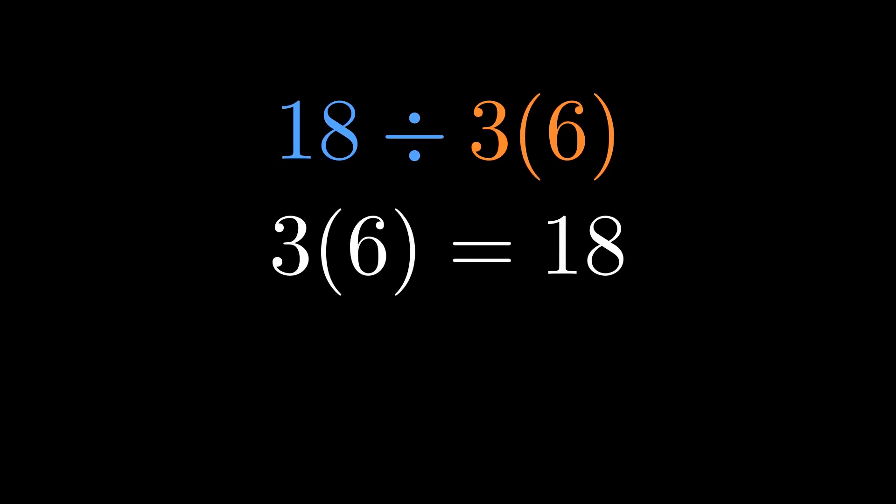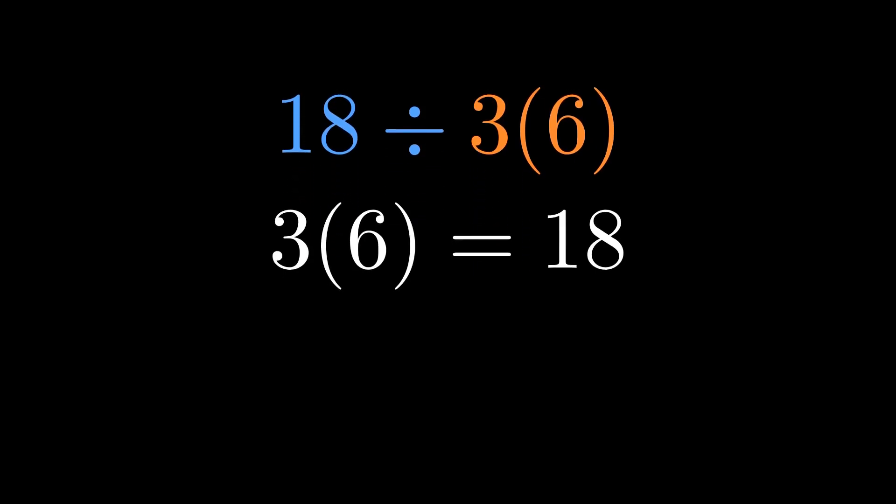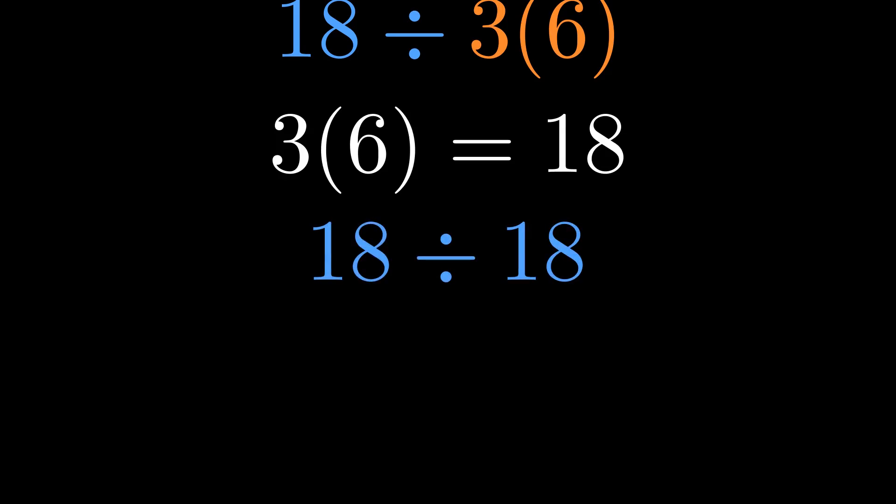So if we do 3 times 6 first, we get 18. That leaves us with 18 divided by 18, which equals 1. That's team 1's answer. It feels right, it looks right. But is it right?